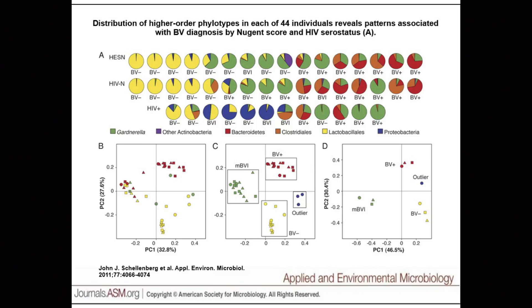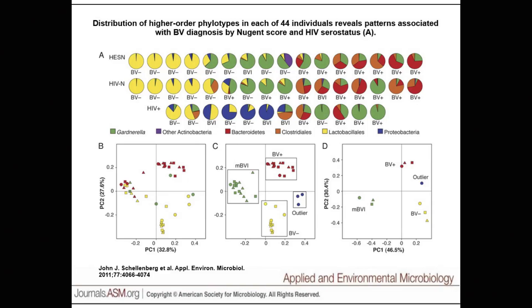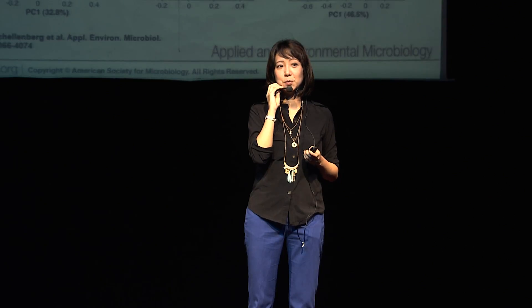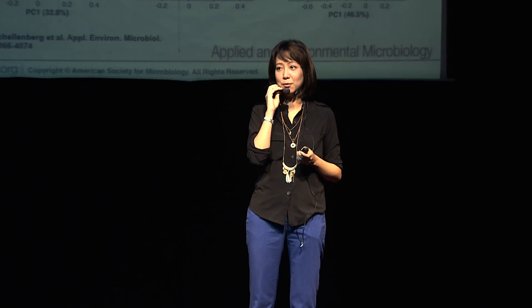Another example shows the population of vaginal bacteria in women with HIV. Those HIV-negative ones show more yellow in color, which is the color of the good bacteria. As you move to those HIV-positive, you can see the yellow color shrinks again. HIV is actually an immune disorder, so immunity also plays a role in killing our good slaves.